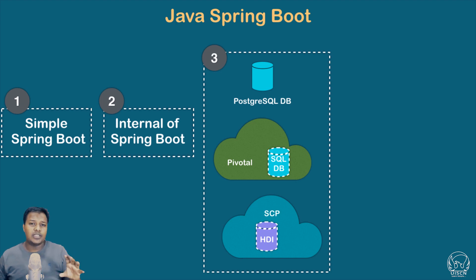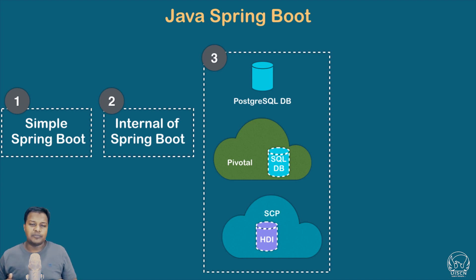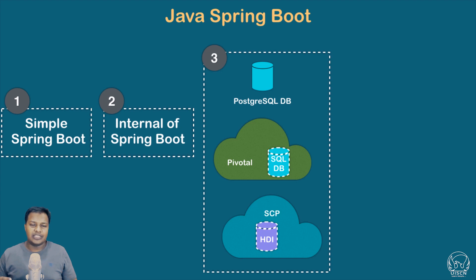Then we will be using the Pivotal Cloud Foundry services, where we will spin up an Elephant database. If you have any kind of free trial in Pivotal, you can perform the same steps. We will show you how to integrate the Spring Boot application into Pivotal, how to bind services and use them. The Elephant database service is equivalent to the PostgreSQL database in a local setup.